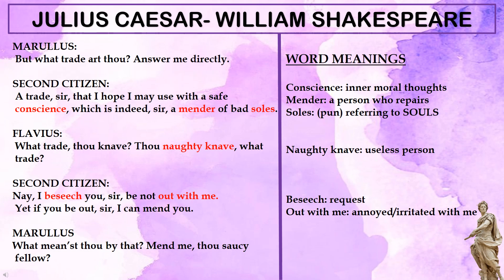Flavius gets very angry and calls the second citizen a 'naughty knave,' meaning a worthless person wasting their time by talking in a roundabout manner. The second citizen then says: 'Be not out with me, sir — I simply repair the soles of shoes.' But he is still indirectly hinting at repairing the souls of people. Marullus grows angry too, saying 'What meanest thou by that? Mend me, thou saucy fellow?'